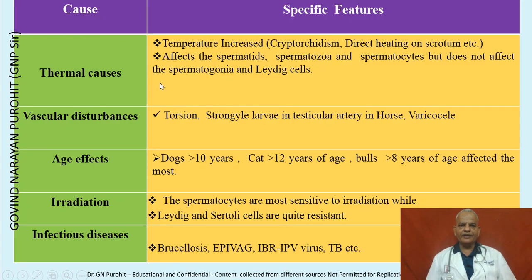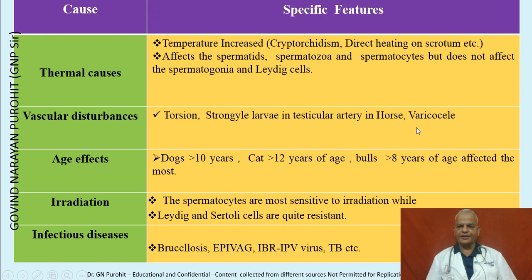Thermal causes result in increased temperature, which affects the spermatids, spermatozoa, and spermatocytes but does not affect the spermatogonia and Leydig cells. Vascular disturbances such as torsion or strongyle larvae in the testicular artery in the horse, or varicocele, can result in testicular degeneration.